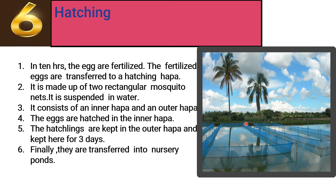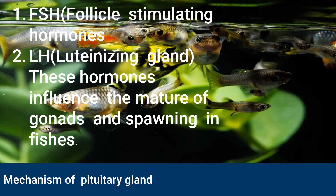Sixth, hatching: as seen clearly in the picture of the hapaa-like structure, after ten hours the eggs are fertilized. The fertilized eggs are transferred into the hatching hapaa. Two types of hapaa are used in this method — a breeding hapaa and a hatching hapaa. The hatching hapaa consists of two layers, an inner and an outer. The eggs are hatched only in the inner layer, and the hatchlings are kept in the outer layer for three days.